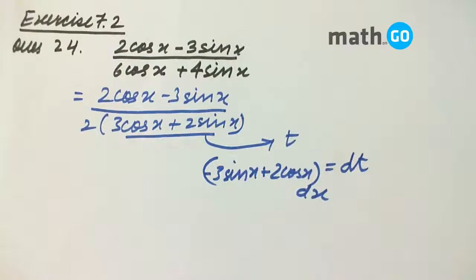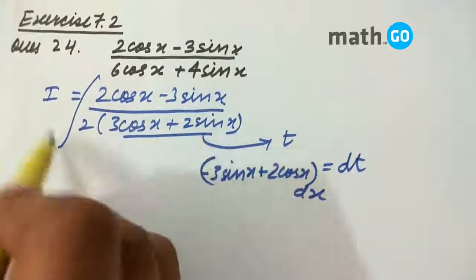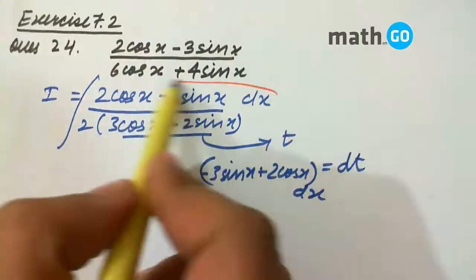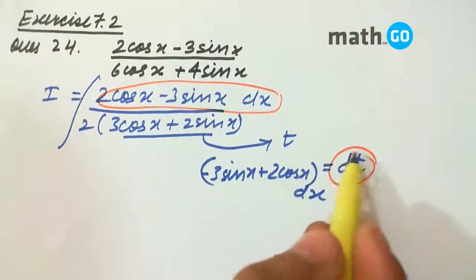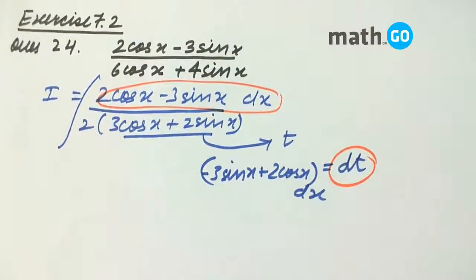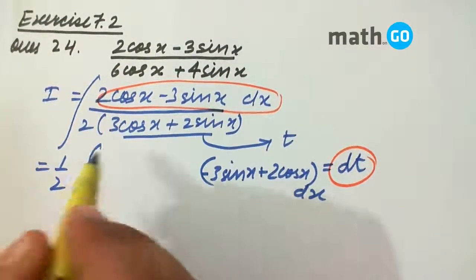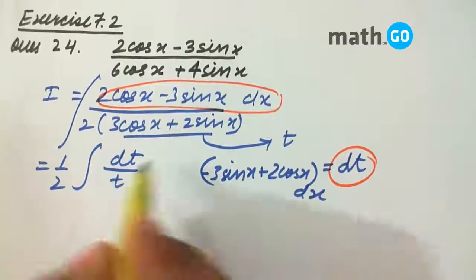Hence, if we are finding the integral this way, we get this complete as dt. And this has t, so our final expression becomes 1 by 2 integral of dt by t.